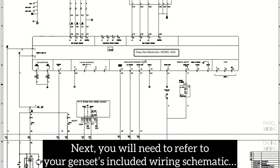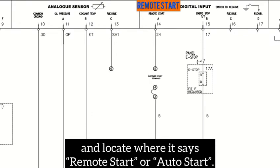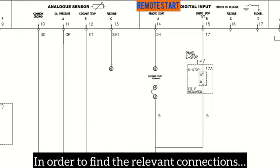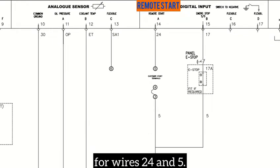Next, you will need to refer to your genset's included wiring schematic and locate where it says remote start or auto start in order to find the relevant connections for wires 24 and 5.